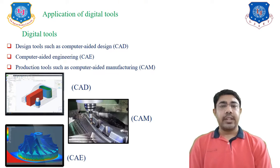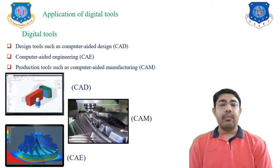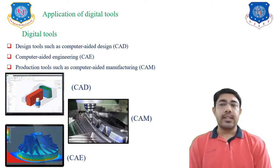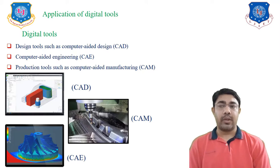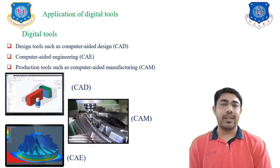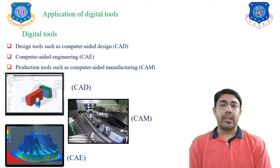Next is computer-aided engineering (CAE). After creating virtual prototypes or 3D models in CAD software, we analyze those products or components in CAE software like ANSYS, NASTRAN, HyperMesh, etc. The third tool is the production tool — computer-aided manufacturing (CAM) — which is used for the manufacturing of products.